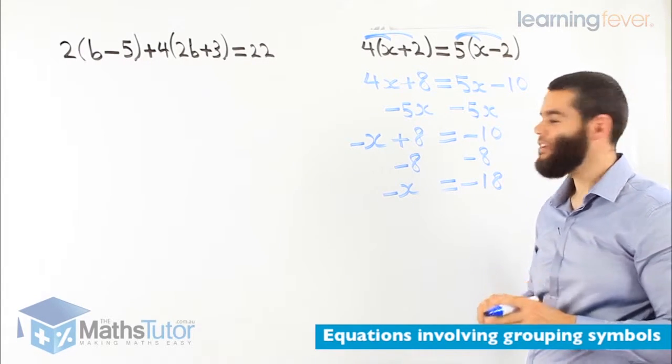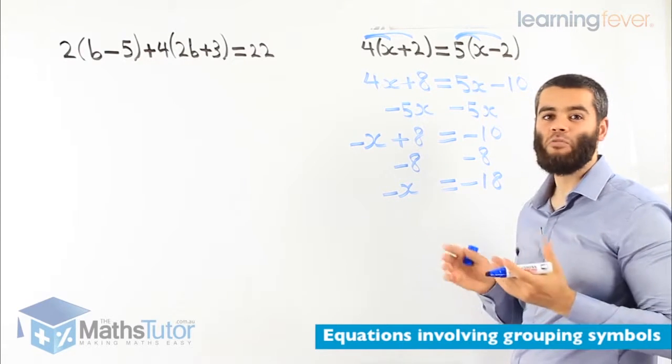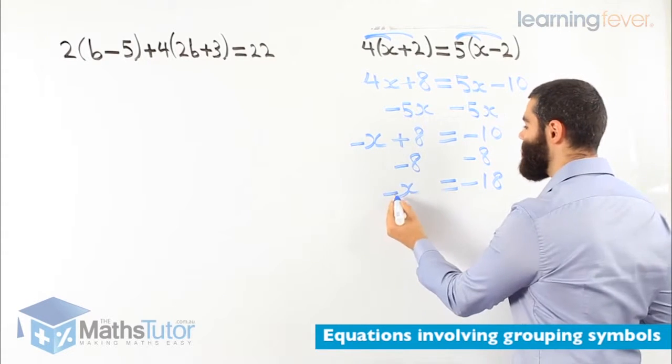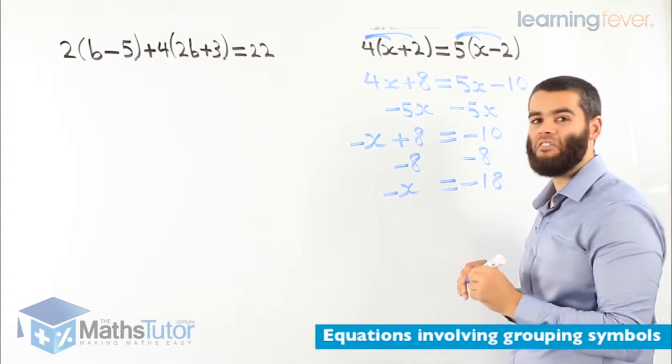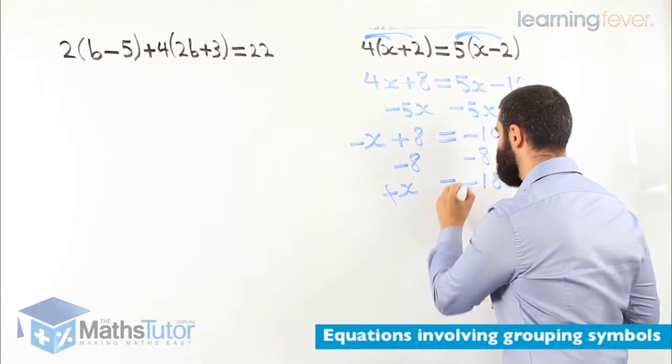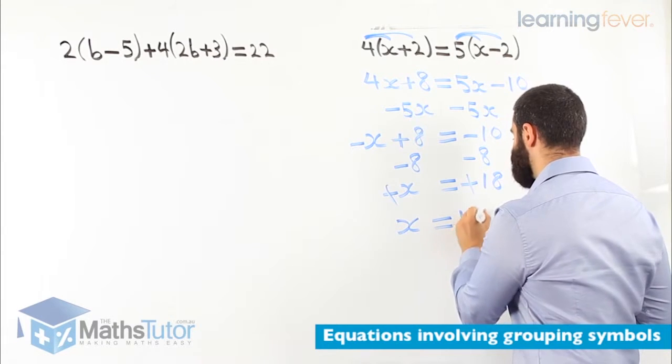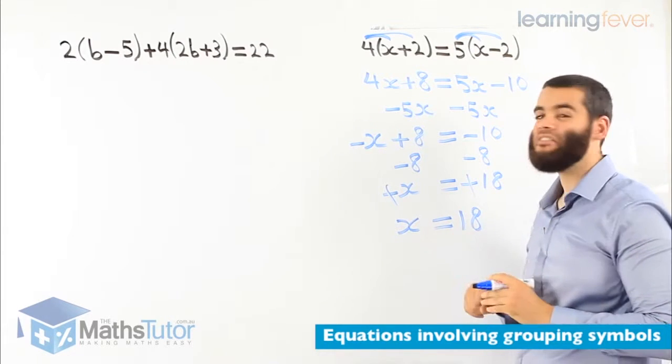Negative x equals to minus 18. What do we do now? We know we're trying to work out x. We're finding the pronumerals x. This is negative x. The trick is we have a negative on this side and negative on this side. What do we do? We cancel them out. They cancel each other out. So the answer is x equals to 18. That's our answer.